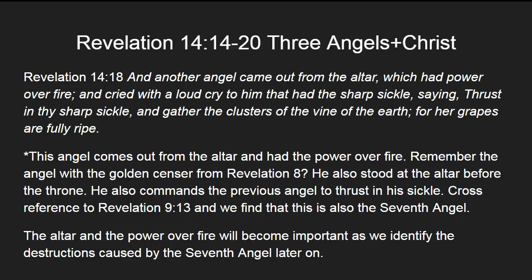This angel comes out from the altar and has power over fire. Do you remember the angel with the golden censer from Revelation 8? That angel also stood at the altar before the throne, and he also commands the previous angel to thrust in his sickle. Cross-referencing to Revelation 9:13, we find that this specific angel is the seventh angel. The altar and the power over fire are going to become very important as we identify the destructions caused by the seventh angel later on.